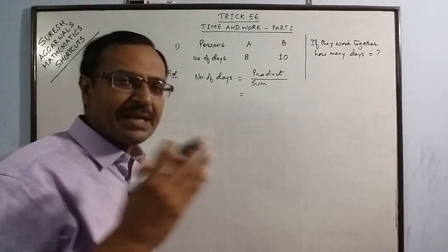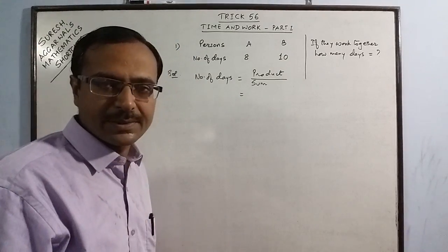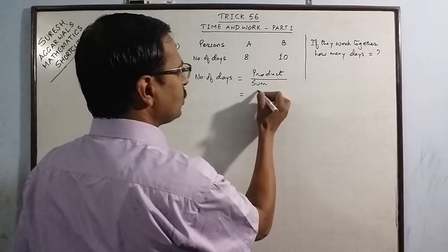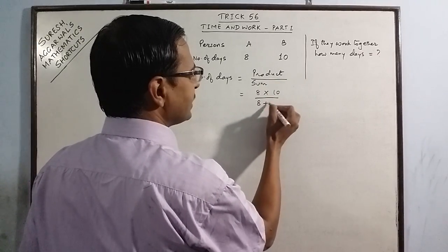The direct solution for this is to find the number of days when they work together - just find the product of the individual number of days and divide it by the sum of the individual number of days. That is all. A very simple concept, very simple shortcut and you get the answer. See, the product here, 8 to 10 and the sum here, 8 plus 10.